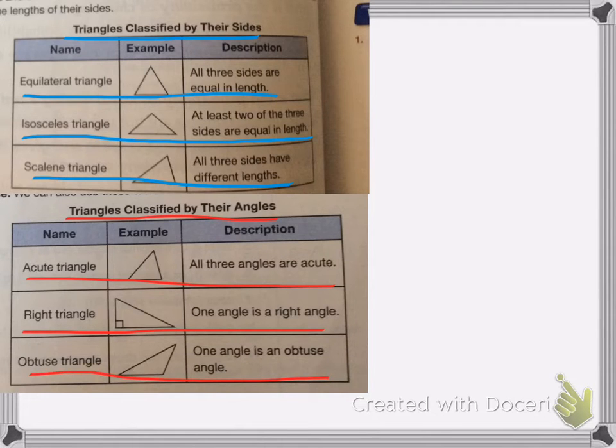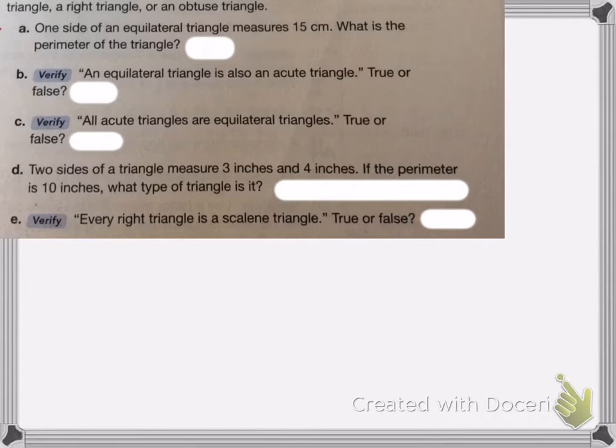Well, if we look back, we can see that an equilateral triangle, all three sides are equal in length. That means that all the sides are equal to 15. So I'm going to do 15 times 3 to figure out my perimeter.